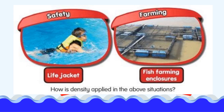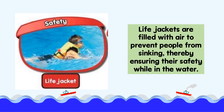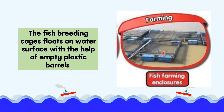Now, let's see how density is applied in the safety and farming industry. The air in the life jacket makes the life jacket less dense than water. Thus, the life jacket floats on the surface of water, ensuring the safety of the users while in the water. The fish farming enclosures use empty plastic barrels. The empty plastic barrels are less dense than water. Thus, the empty plastic barrels help the fish breeding cages float on the surface of water.